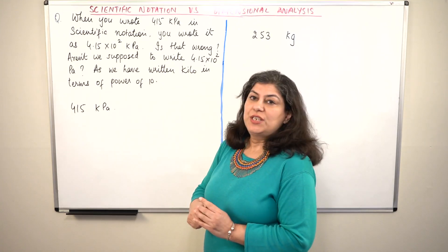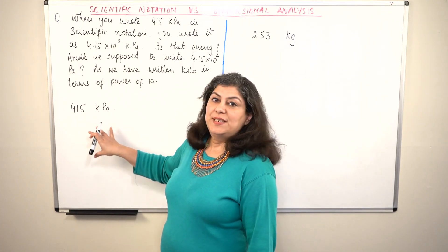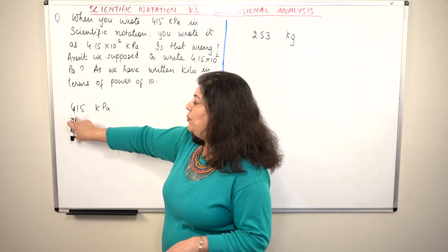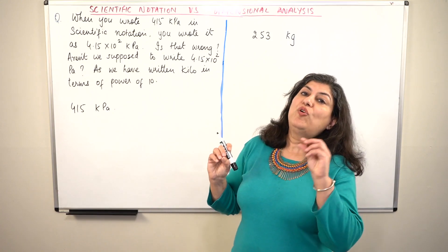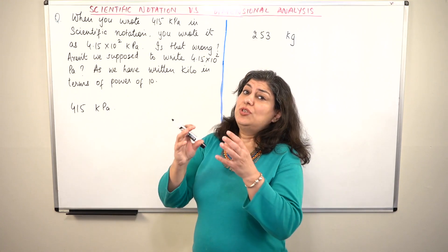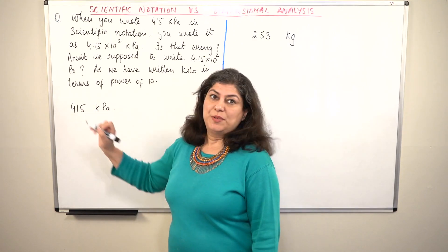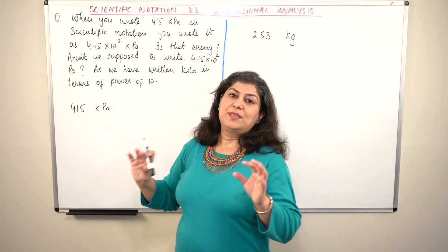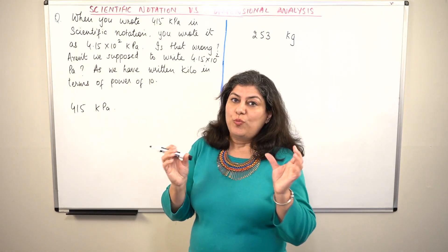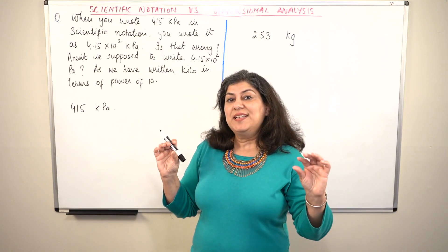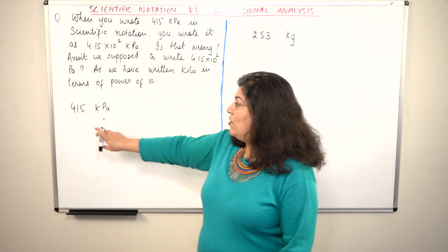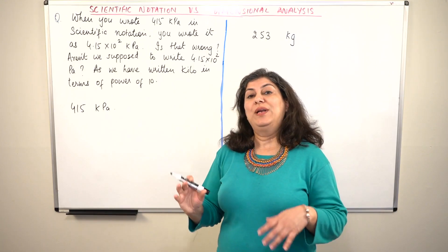So I wrote it in scientific notation. What is scientific notation? In scientific notation, you keep only one digit of the number before the decimal. Everything else should come after the decimal, and in order to do that — in order to shift the decimal — you have to multiply the number by certain powers of 10, which may be positive or negative, in order to not change the value of the number. For example, 415 kilopascals — how will I write it in scientific notation?